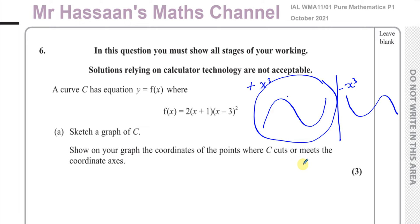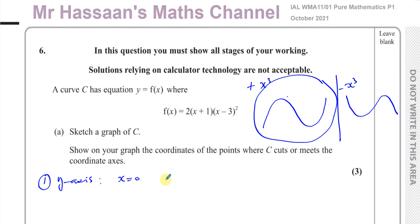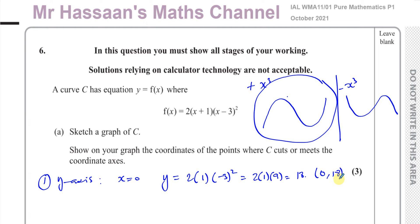When you sketch any type of curve, once you determine its basic shape, you need to find where it crosses the axes. It crosses the y-axis when x equals 0. So when x equals 0, y is going to be 2 times 1 times (minus 3) squared, which is 2 times 1 times 9, which is 18. So it crosses the y-axis at the point (0, 18).